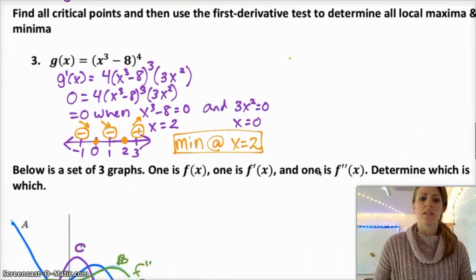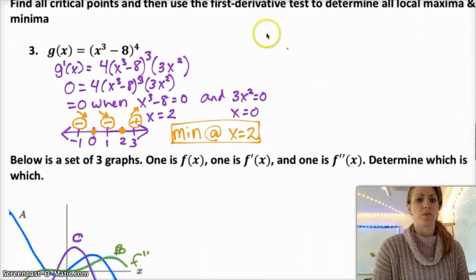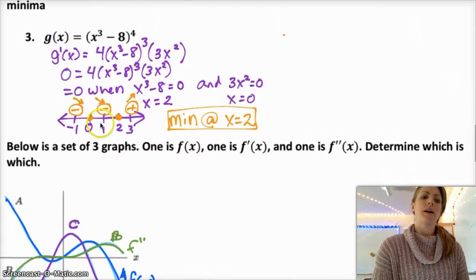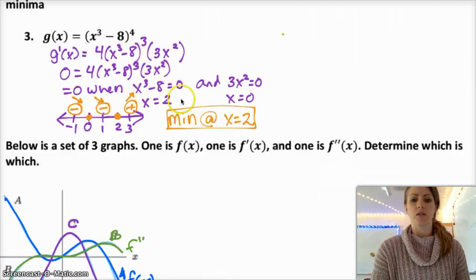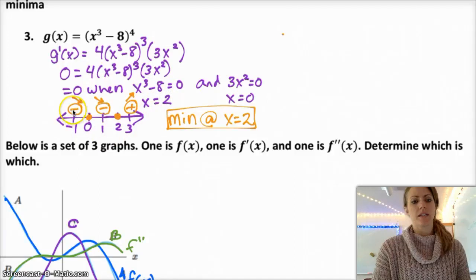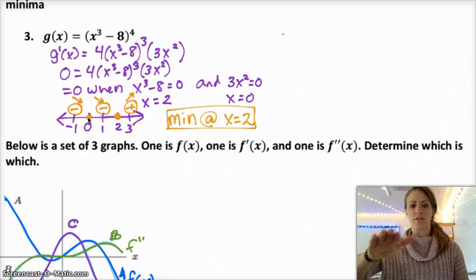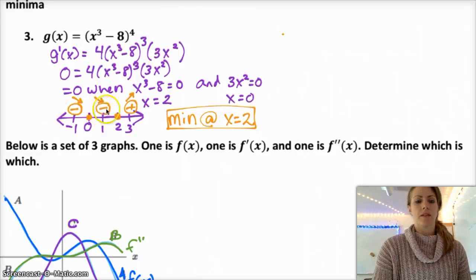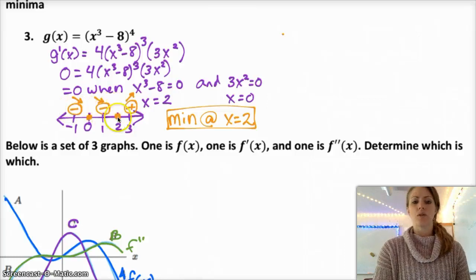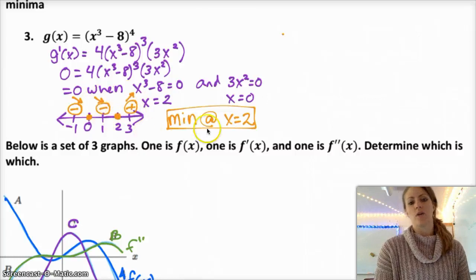For number 3, the question just asked for the critical points and the first derivative test to determine all local max and min. I took the derivative and solved. It equals 0 when x is 2 and 0. It decreases to 0, then levels off, and then decreases again, because the derivatives are negative both to the left and right of 0. But then at 2 it switches to a positive derivative, so that's actually a local minimum.